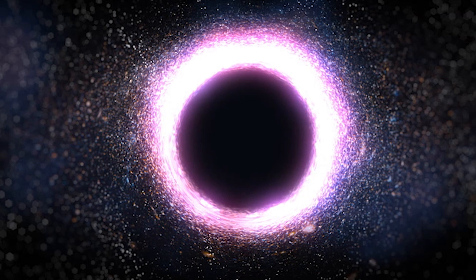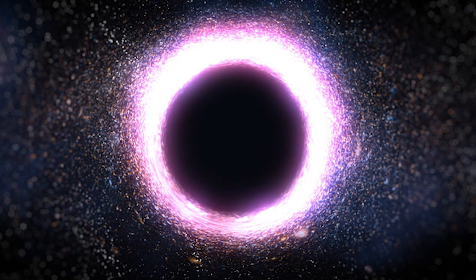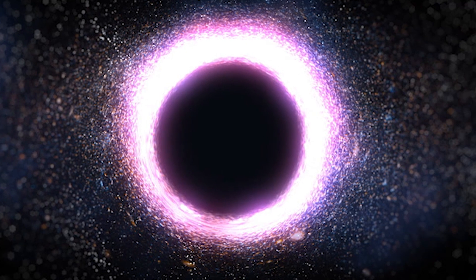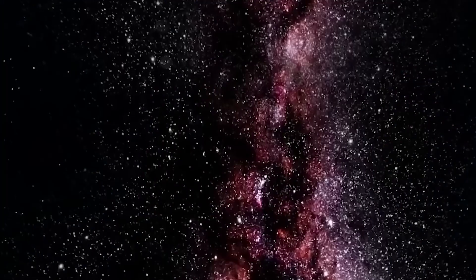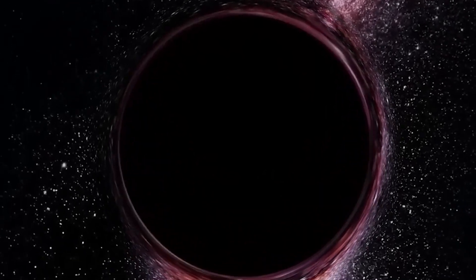Specifically, the new image of the black hole reveals the inner workings of the accretion disk, which is the swirling disk of gas and dust that surrounds the black hole. By studying the polarization of the radio waves emitted by the disk, the researchers were able to measure the strength and direction of the magnetic fields that are driving the material around the black hole.